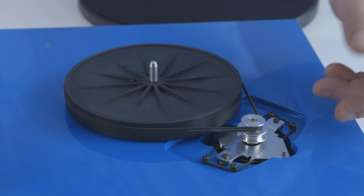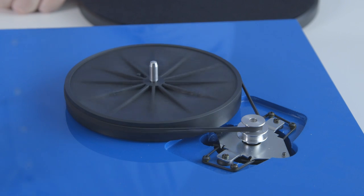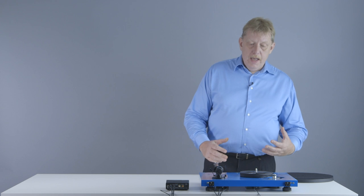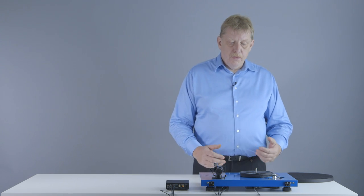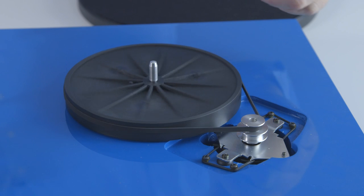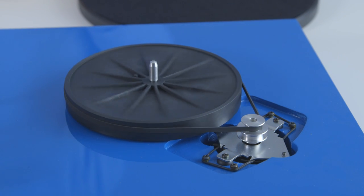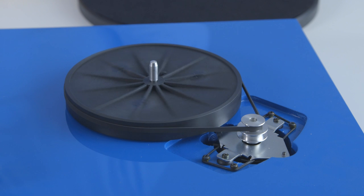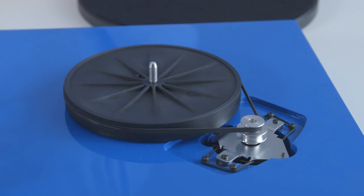The motor is then connected to the sub platter with the belt. This rubber belt also acts as a dampening device for vibrations. This belt further dampens residual vibrations of the motor so that they're not transferred to the sub platter. This is one of the reasons why Project uses a belt drive system in all their turntable models.